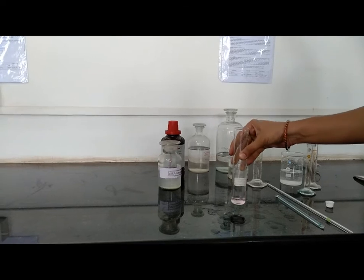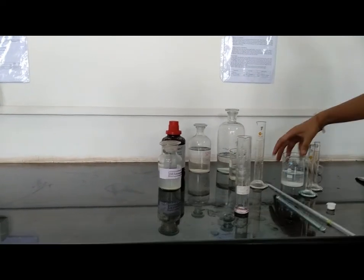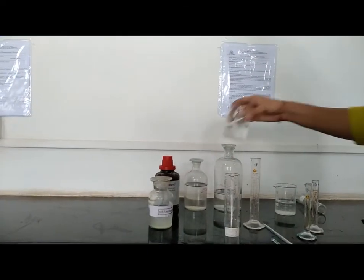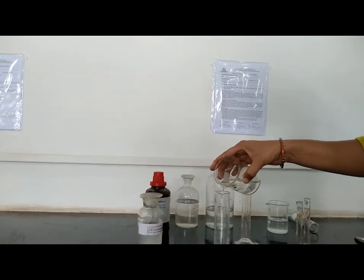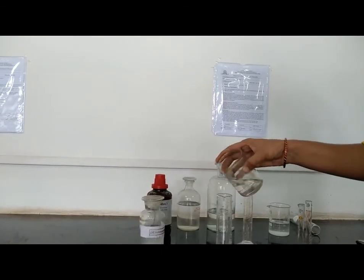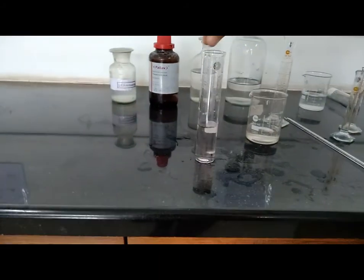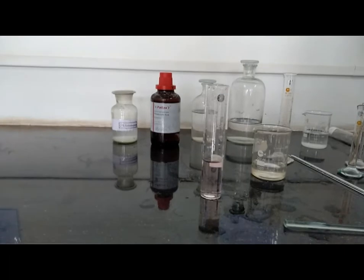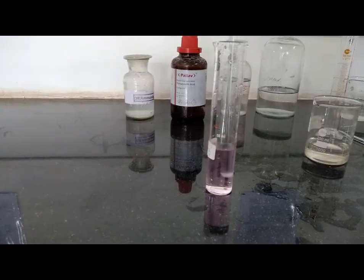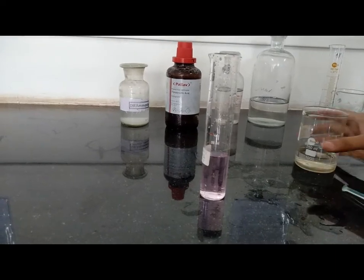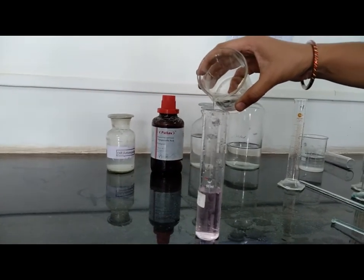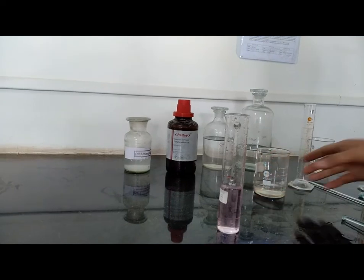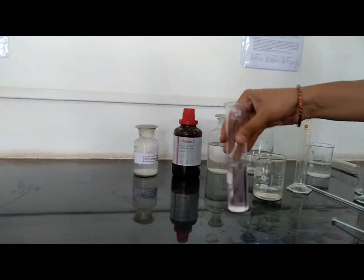And make this solution slightly alkaline with the help of dilute ammonia. Again dilute this solution, then add up to 50 ml with distilled water. After stirring we have to adjust. Now keep this solution aside for 5 minutes.